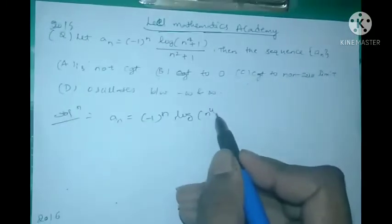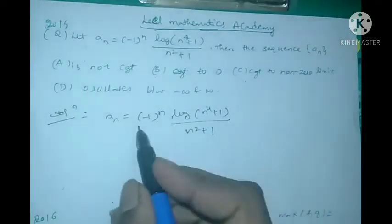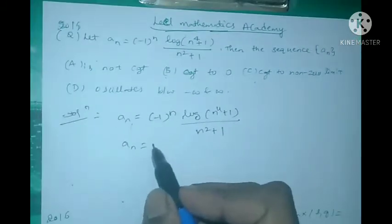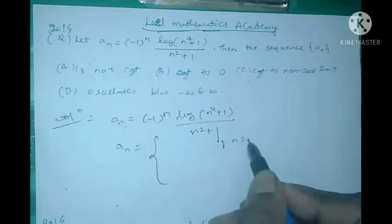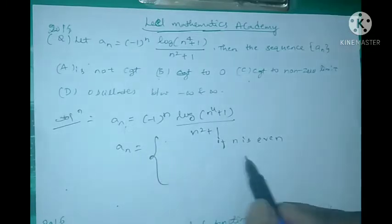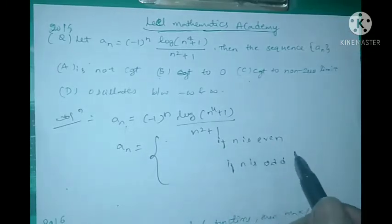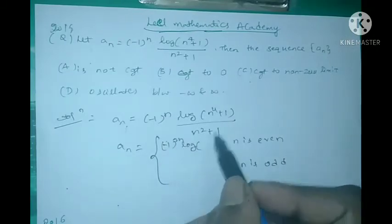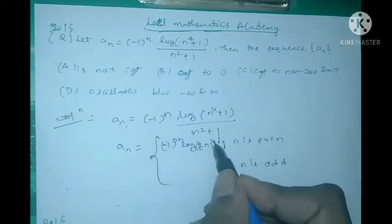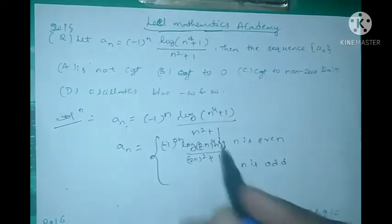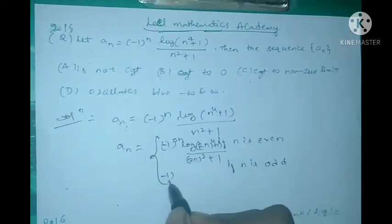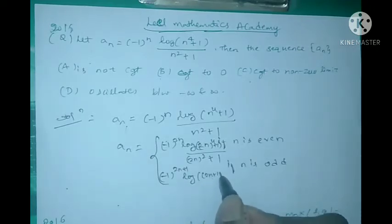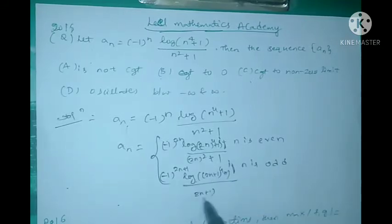Given that a_n = (-1)^n * log(n^4 + 1) / (n^2 + 1). We consider two cases: if n is even, we substitute n = 2n, giving (-1)^(2n) * log((2n)^4 + 1) / ((2n)^2 + 1). If n is odd, we substitute n = 2n+1, giving (-1)^(2n+1) * log((2n+1)^4 + 1) / ((2n+1)^2 + 1).